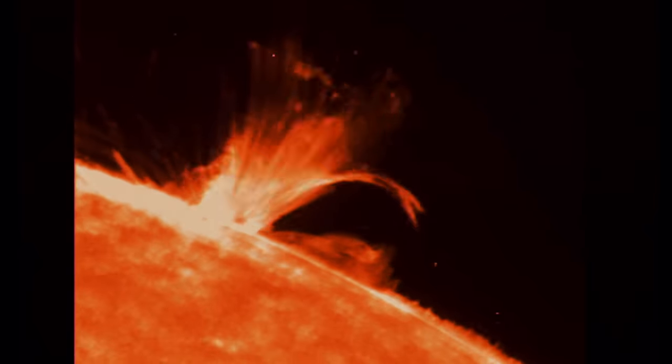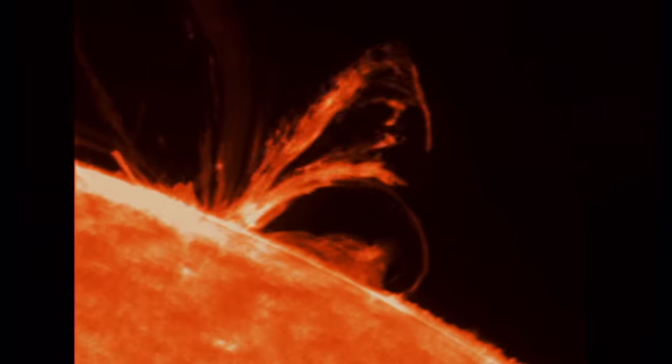Before we knew of CMEs, we thought that the magnetic storms that occurred on Earth were a consequence of this brightening that was seen at the Sun, the flare. And as we've learned more about the Sun, we've realized that it's the CME that actually causes the magnetic storm.